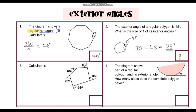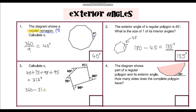Question three: calculate x. We have a polygon here with five angles. We know the sum of exterior angles is 360 degrees, so we add up all the known angles — which sum to 313 degrees — and subtract that from 360 degrees. That gives us 47 degrees, which is my answer.